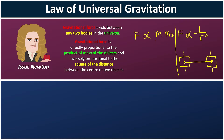So this basically tells us that the heavier the object, the stronger the gravitational force. And the further apart the two objects, the weaker the gravitational force.